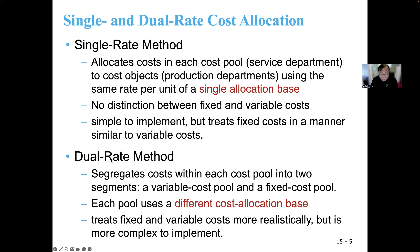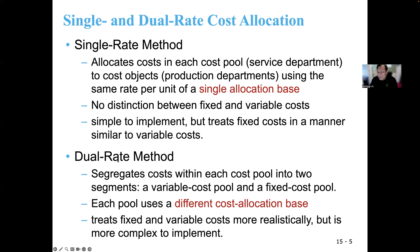The dual rate method divides the cost within each cost pool into two categories: a variable cost pool and a fixed cost pool. Each pool uses its own cost allocation base, so they treat fixed cost and variable cost differently. This is more realistic because the cost allocation base for variable cost versus fixed cost could be different, but it's more complex to implement.